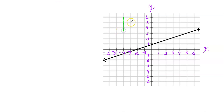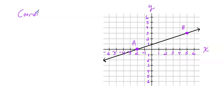You want to pick points on the line itself right where the grid lines cross. Reading from left to right, here's a nice point where the grid lines cross — I'll put a point there. And here's another convenient point where the grid lines cross. Now I have two points. I'll call this point A and this point B.